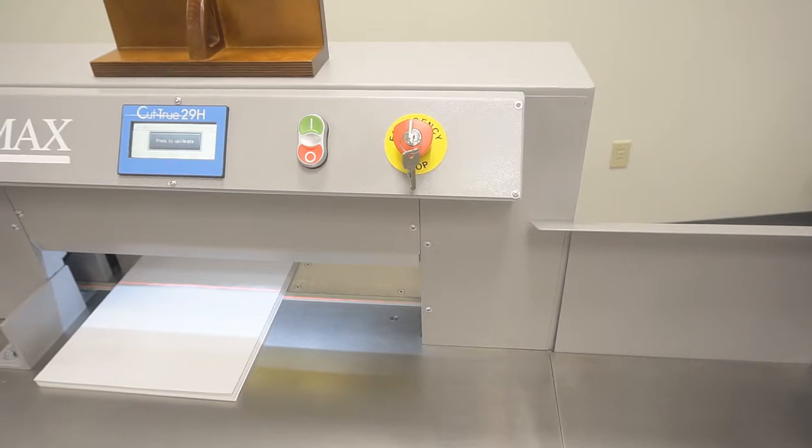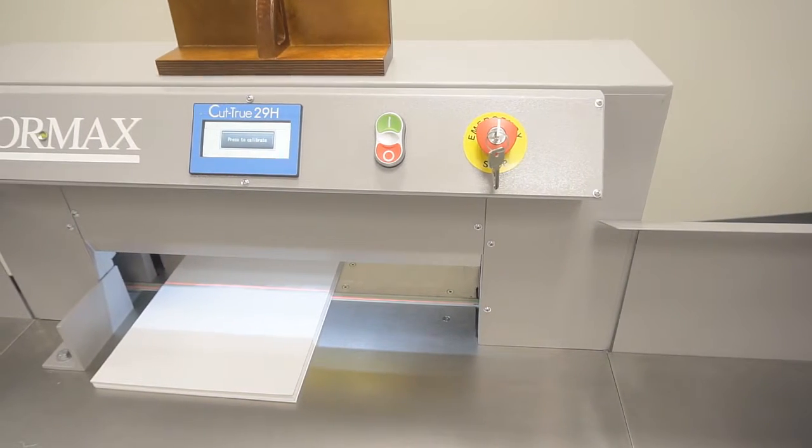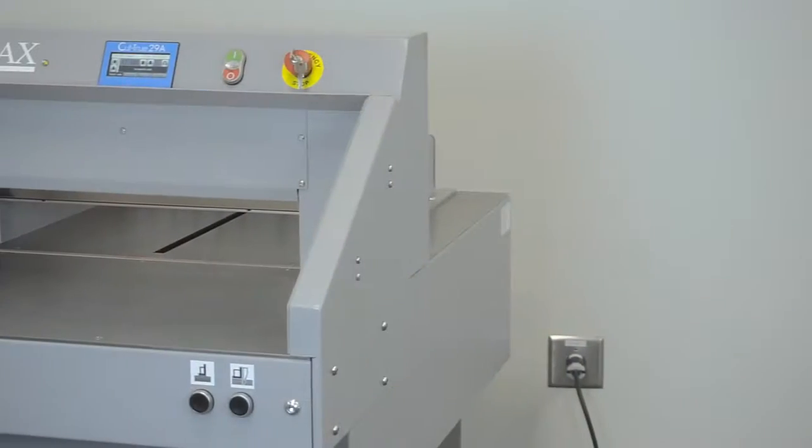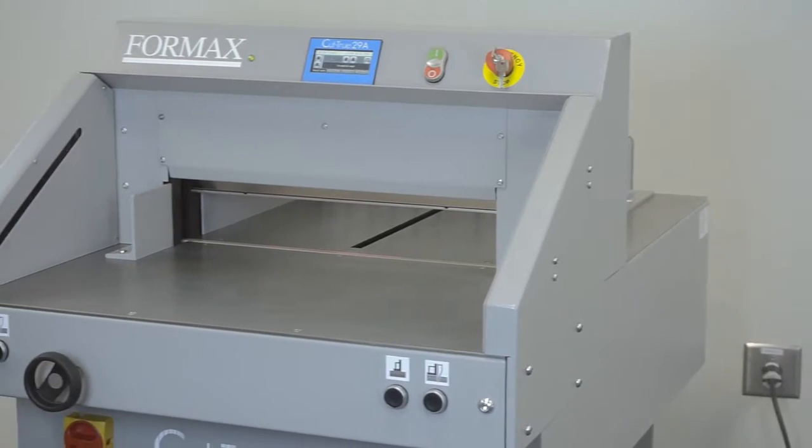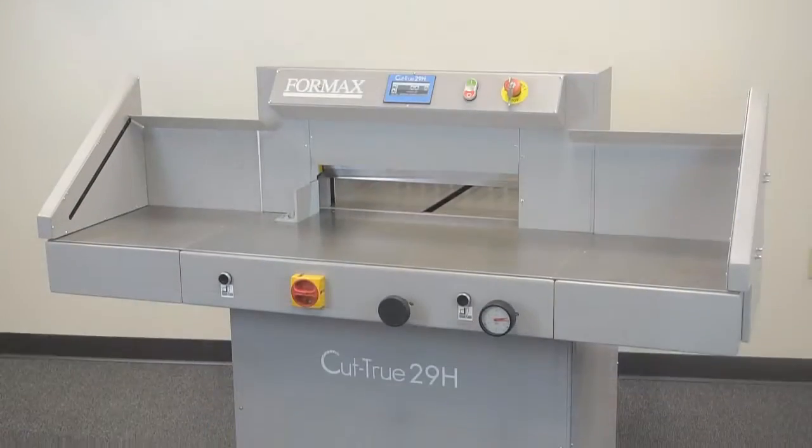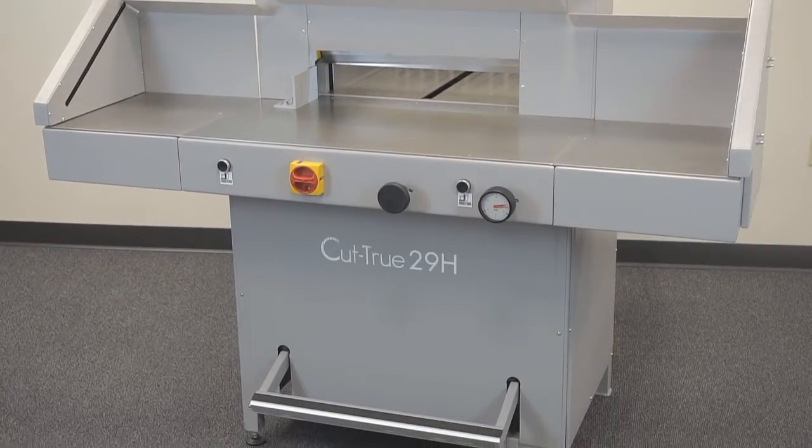Formax Cut-True 29A and 29H cutters are ideal for transforming large sheets into brochures, invitations and more with crisp, accurate cuts and are a welcome addition to print shops and in-plant finishing operations.